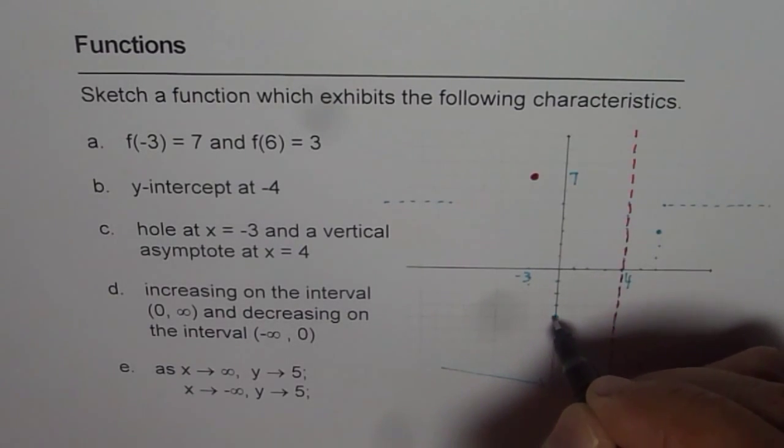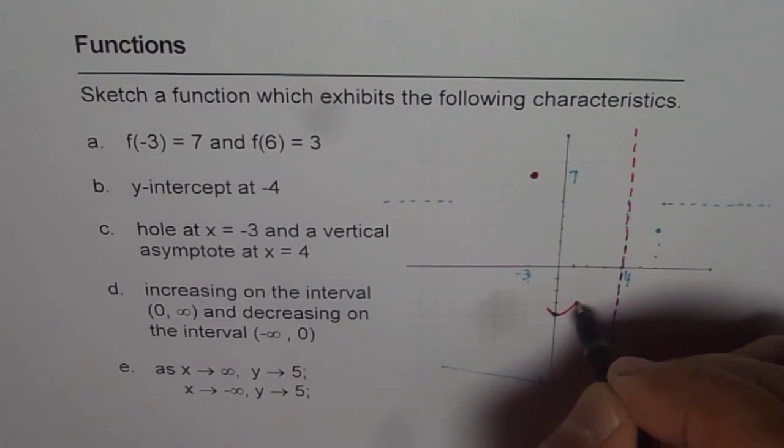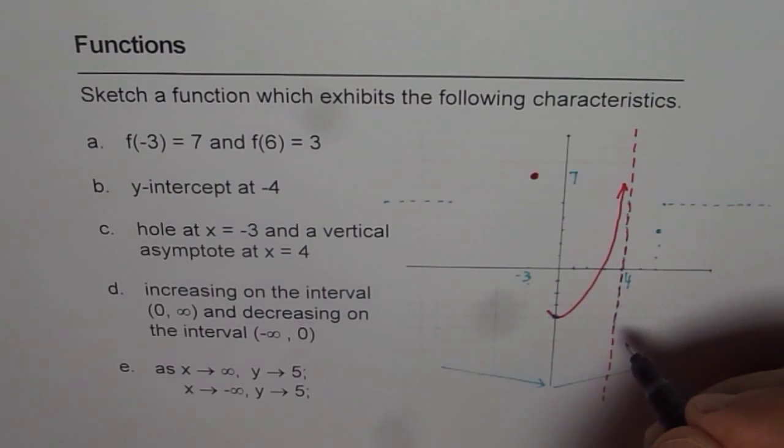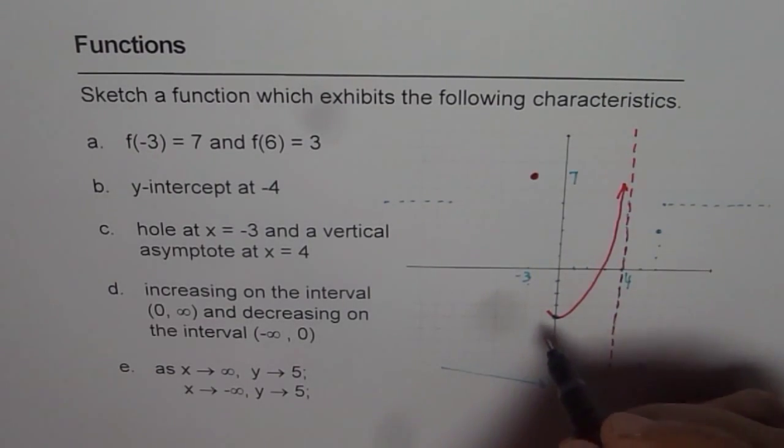So since it decreases after this point and we have a vertical asymptote, the option for us is, kind of, we can go like this. And that is the vertical asymptote. I hope that makes things very clear. So that's how it is.